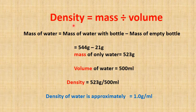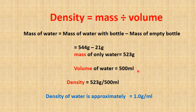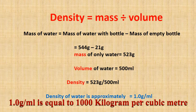Let's have a look at the calculation. The density formula is mass divided by volume. We measured the mass of water with bottle as 544 gram and mass of empty bottle as 21 gram. By subtracting both, we got the mass of only water, that is 523 gram. We already took the volume of water as 500 ml. By substituting both mass and volume in the formula, we get approximately the density of water as 1 gram per milliliter.